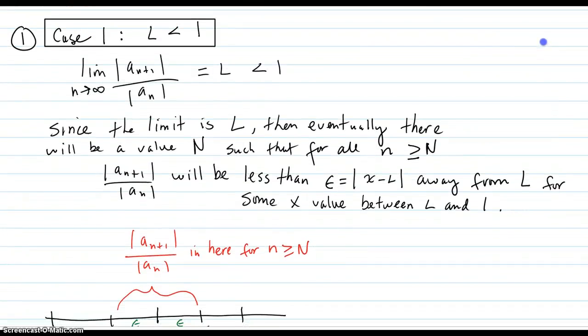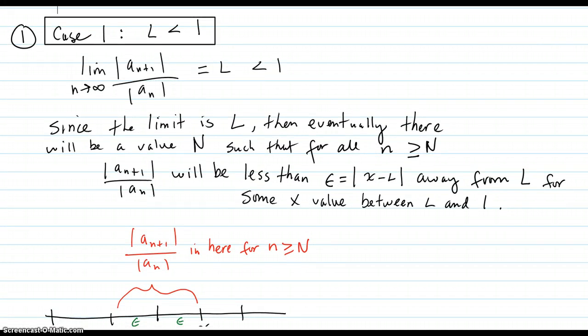Here is the proof that you have to know for the test. Case 1: L is less than 1. So you set up your ratio equal to L, and that L turns out less than 1. That's the case, case 1.